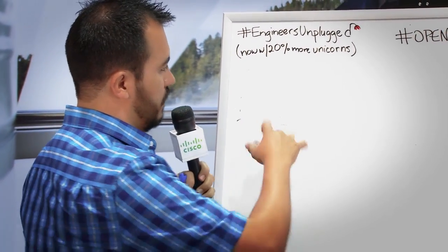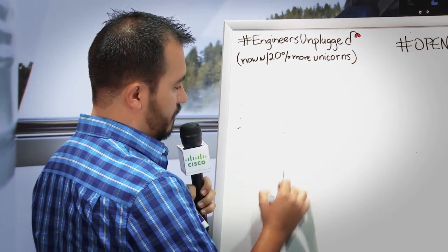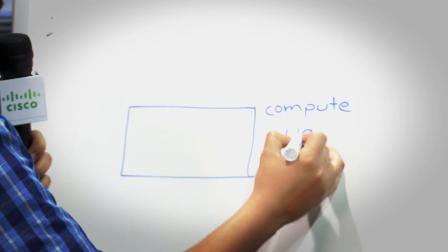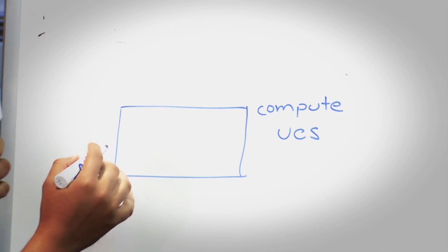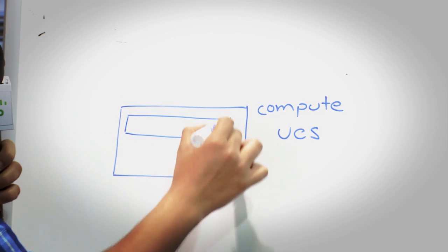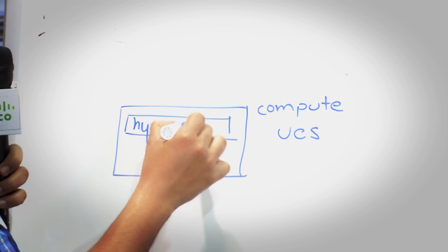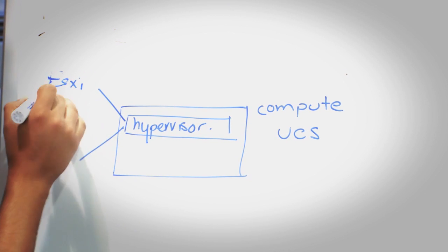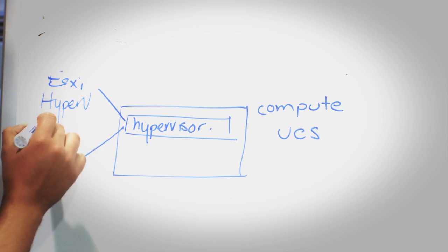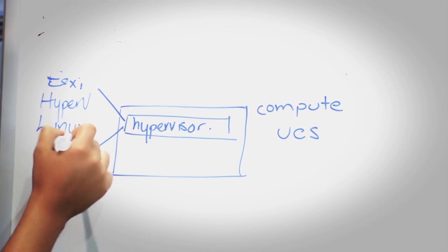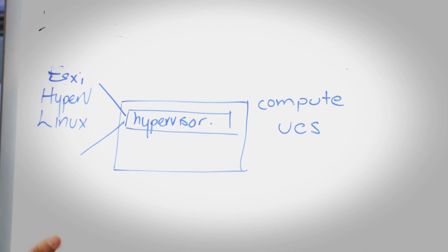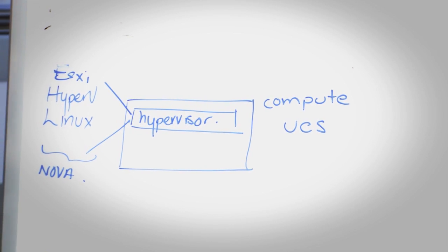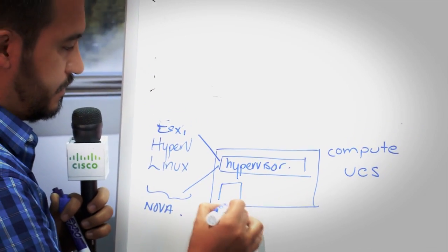So let me start with the bottom part of the rack. So basically you have your compute based on UCS. So one of the things that OpenStack provides is at the hypervisor layer, compatibility with different hypervisors, ESXi, Hyper-V, and Linux on different flavors: RHEL, SUSE Enterprise, Ubuntu, etc. So the project that actually is in charge of this is called Nova, which is the compute part. So basically what is going to help you to have your VMs created.